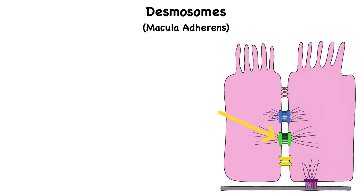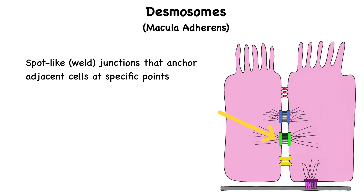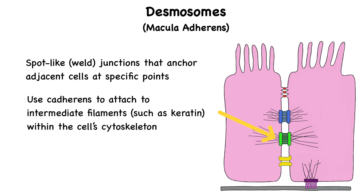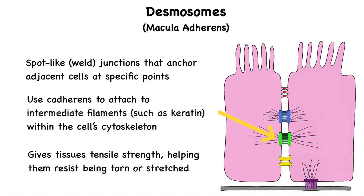Desmosomes are spot-like junctions that act like rivets or button snaps, anchoring adjacent cells together at specific points. Unlike adherens junctions which connect to actin filaments, desmosomes use transmembrane glycoproteins called cadherins to attach to intermediate filaments, such as keratin, within the cell's cytoskeleton. This structural link gives tissues tensile strength, helping them resist being torn or stretched. You'll find desmosomes in tissues that experience a lot of mechanical stress, like the epidermis of the skin and cardiac muscle. Their role is to keep cells from pulling apart when the tissue is under pressure, like during a heartbeat or skin movement.